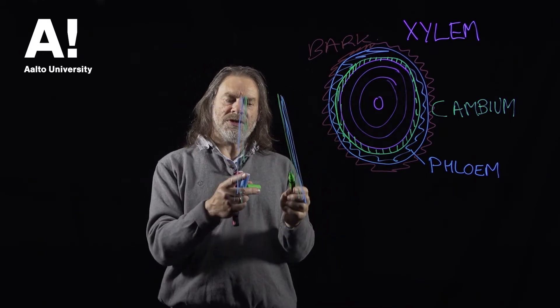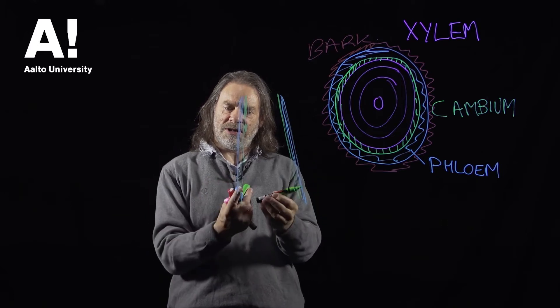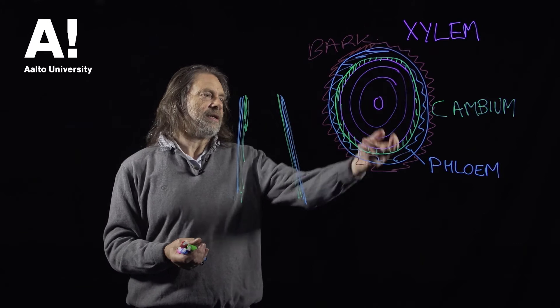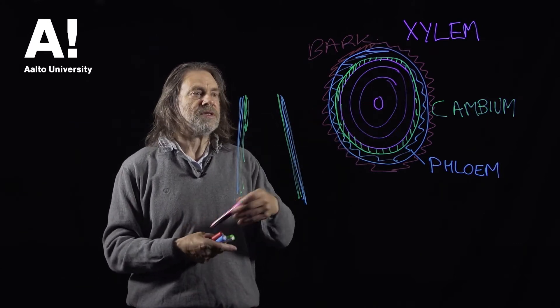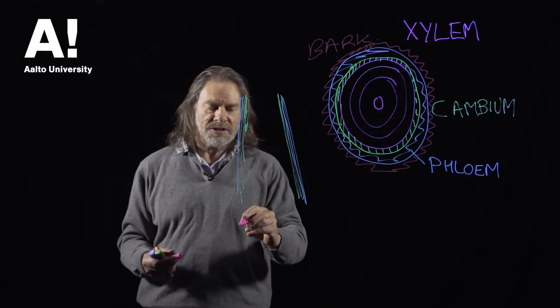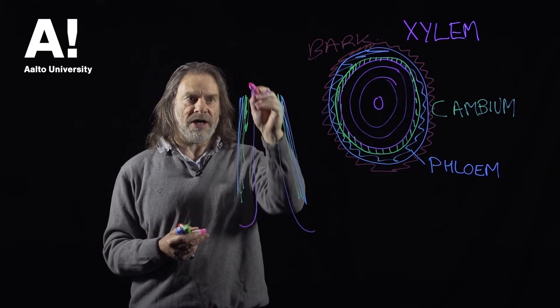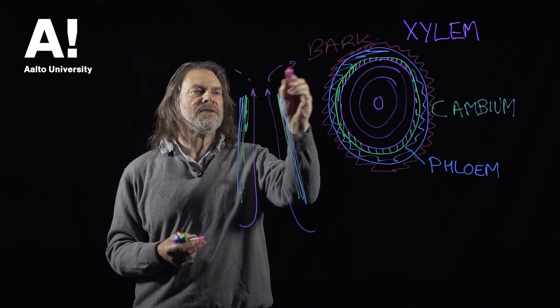So this is producing cells on the inside of the tree and it's producing cells on the outside of the tree as well. And then inside that, of course, we have the xylem tissue. The xylem conducts water from the roots up to the crown where it evaporates into the atmosphere.